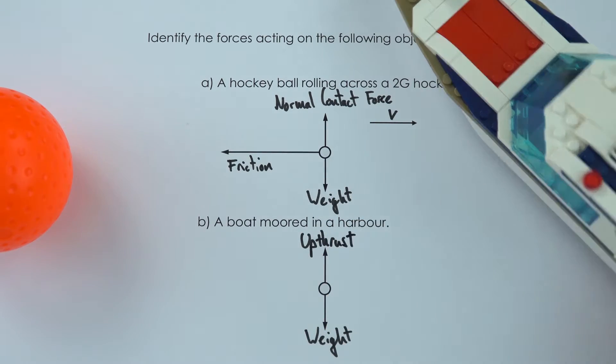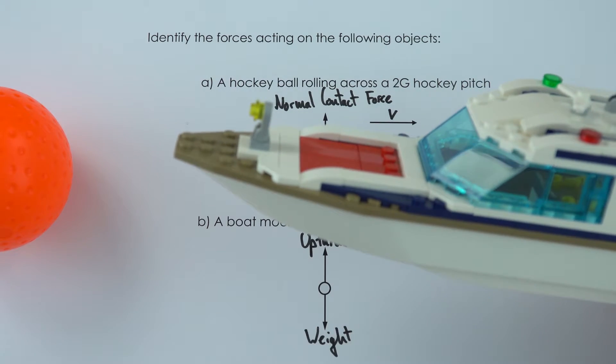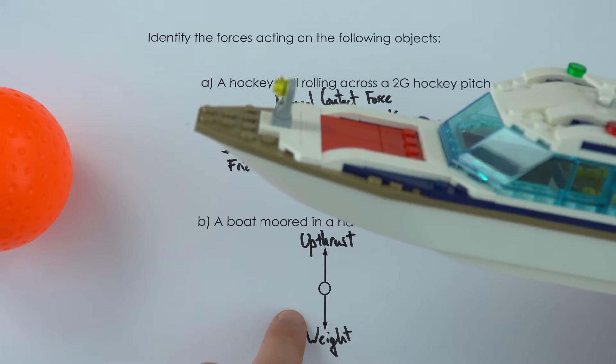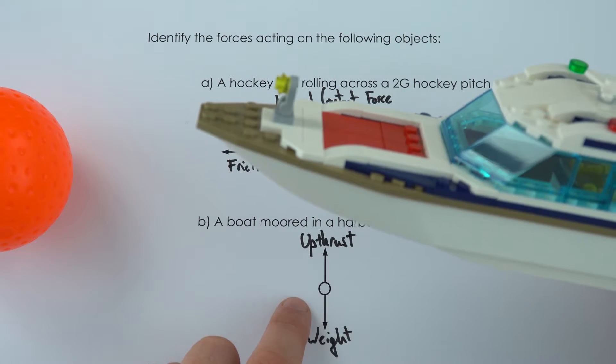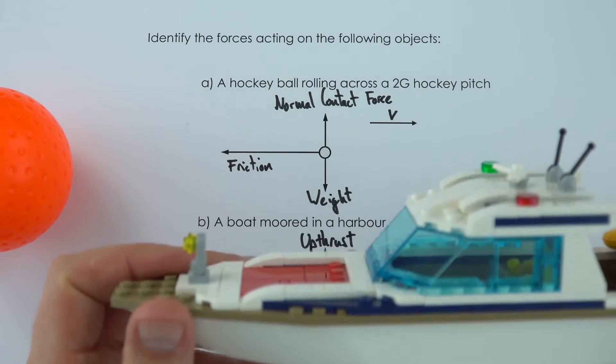So the boat, nice and static in the harbour, you've got the weight acting down, and that's equal in size and opposite in direction to the upthrust which is stopping it sink.